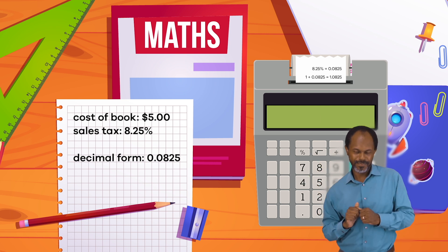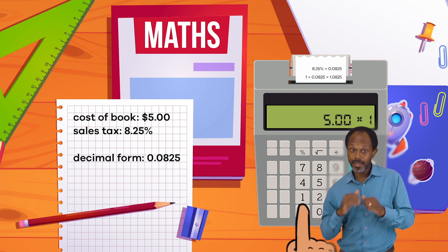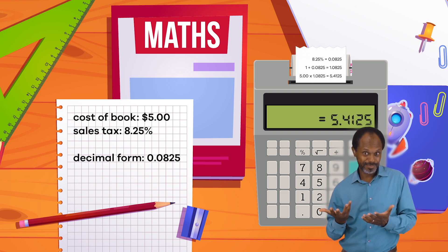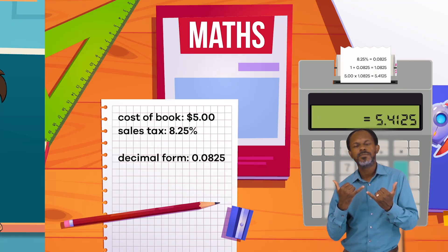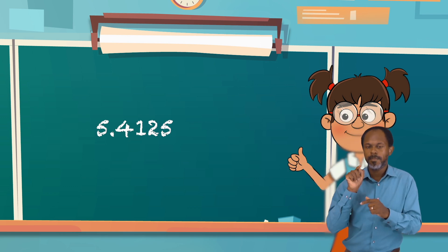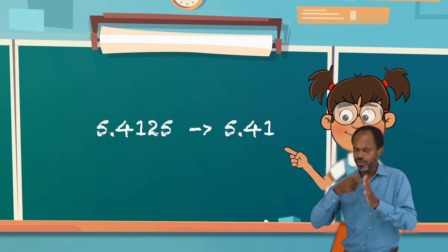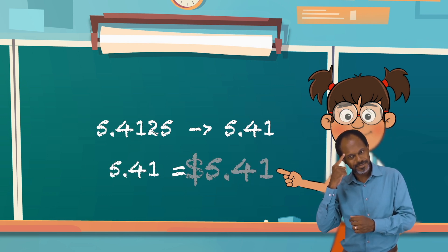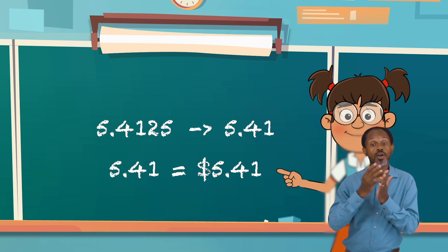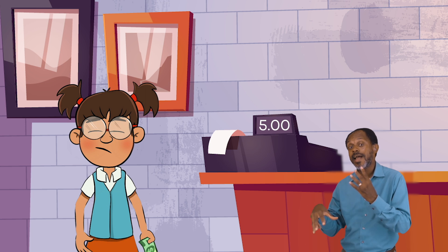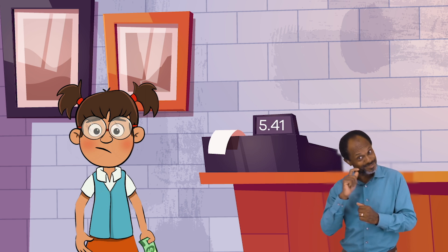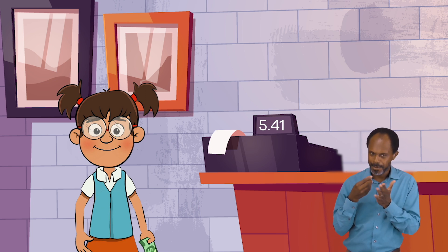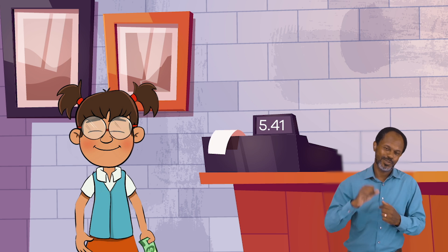So she will need to multiply 5 with 1.0825. This equals 5.4125. Last, she needs to round the number to the nearest hundredth. This will give her the total cost of the book, which is $5.41. So the sales tax on the $5 book equals $0.41. And since Frankie has $6, she can afford to buy the book. What great news!